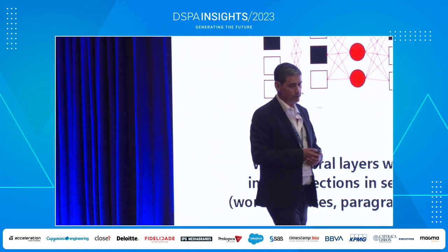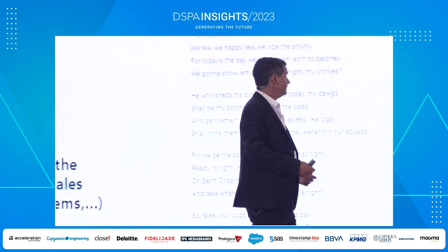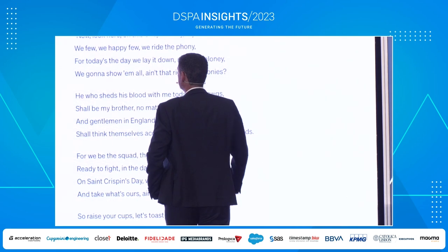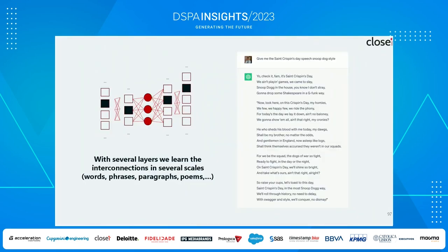If I put several layers of this, I can learn the interconnections at several scales: words, phrases, paragraphs, and poems. I asked ChatGPT to give me the Saint Crispin's Day speech from Henry V of Shakespeare in Snoop Dogg style. It was remarkable: 'And gentlemen in England, now sleeping like logs.' This is amazing — nobody could do this better, because it was made by two brains at the same time. It's quite a remarkable thing.